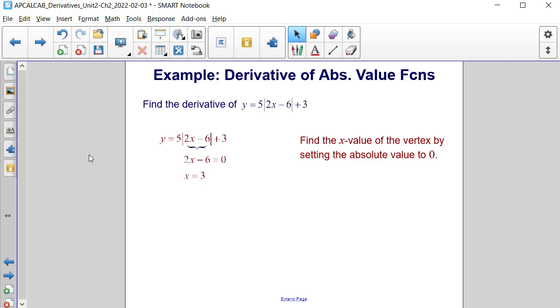The first step is to find the x value of the vertex, or the turning point, in our absolute value function. So what's inside of the absolute value is that 2x minus 6, and we're going to set it equal to 0 and solve for x. Well, if we add 6 to both sides and then divide both sides by 2, we get that the x value will be 3.